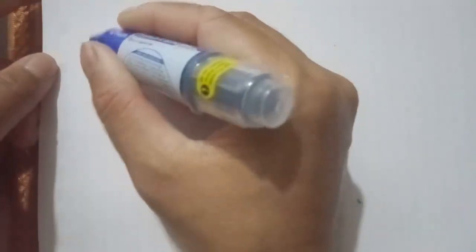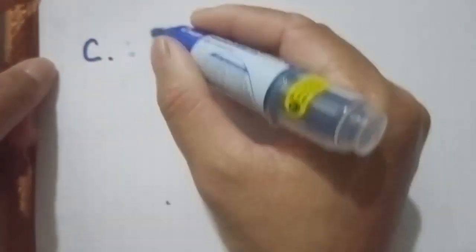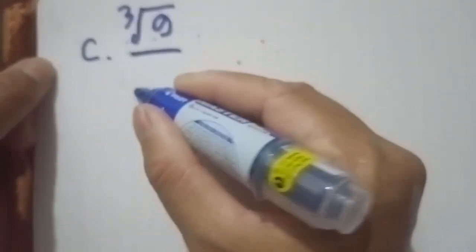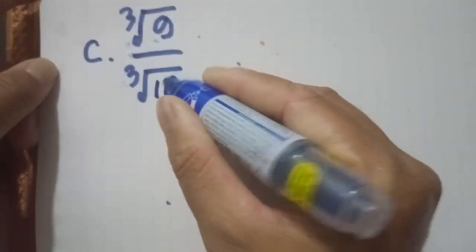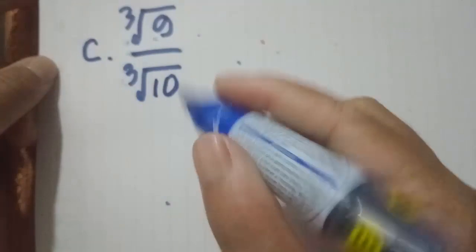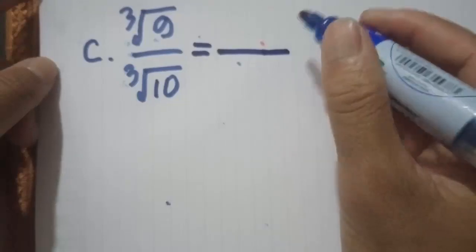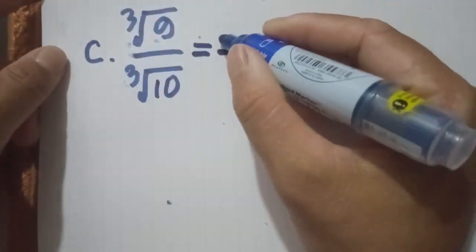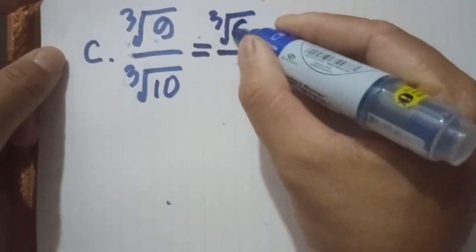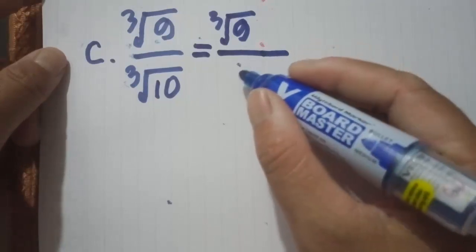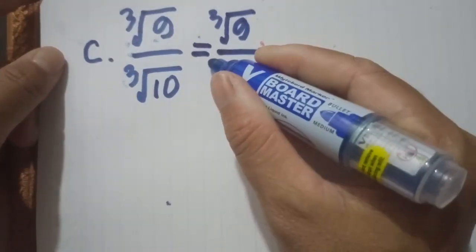Okay, exercise C: Radical 3, 9 on Radical 3, 10. So now how to handle the radical — you can see one by one. The way is: first we can write Radical 3, 9 and below Radical, Radical 3, 10.